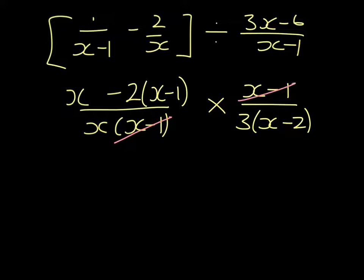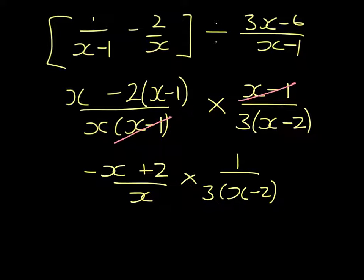x minus 1s are going to cancel. My first numerator becomes x minus 2x, so it's minus x plus 2. All over x multiplied by 1 over 3 upon x minus 2.